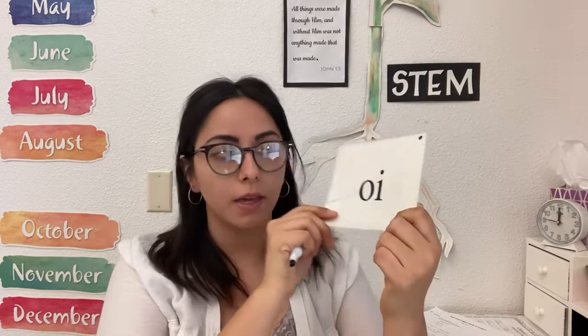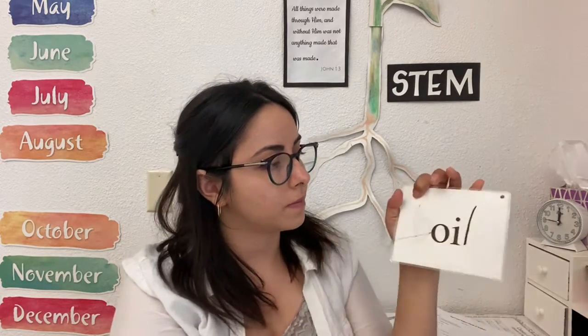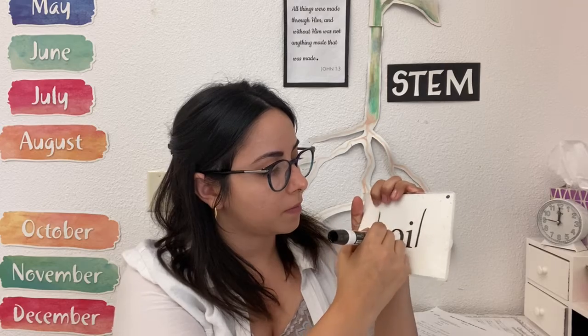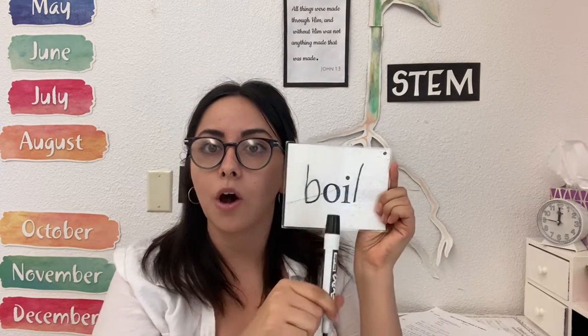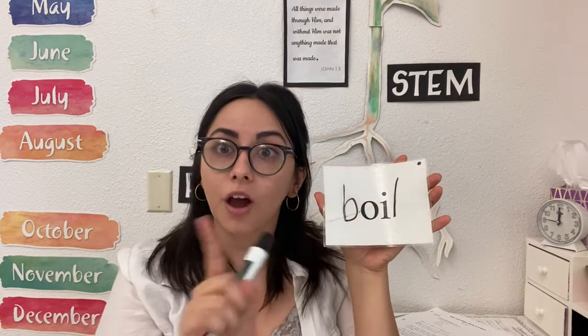Now let's look at our other one. This was oi that we may not use at the end of an English word because English words don't end with i. So what can we make this word into? How about if I add a b here and an l at the end? What's that spell? B, oi, l — boil. So now I have boil from my oi that I may not use at the end of an English word. That's why it's in the middle.